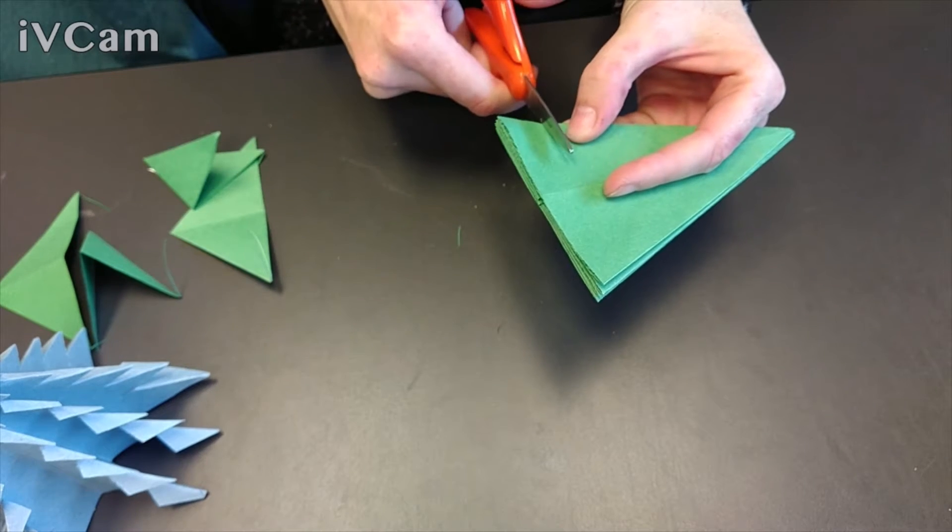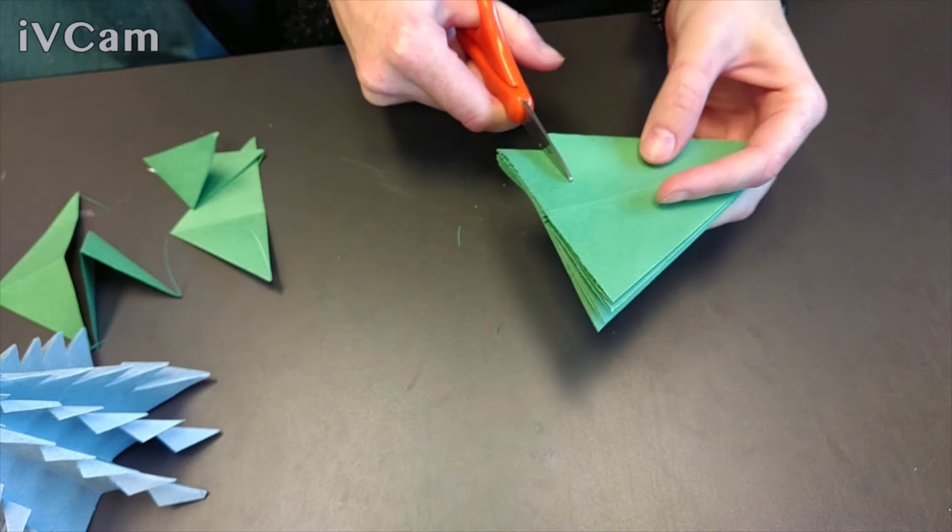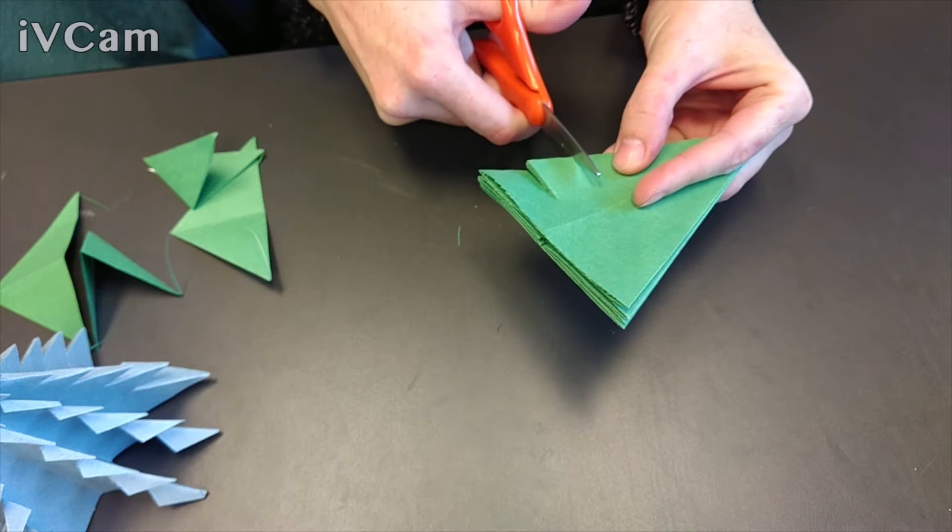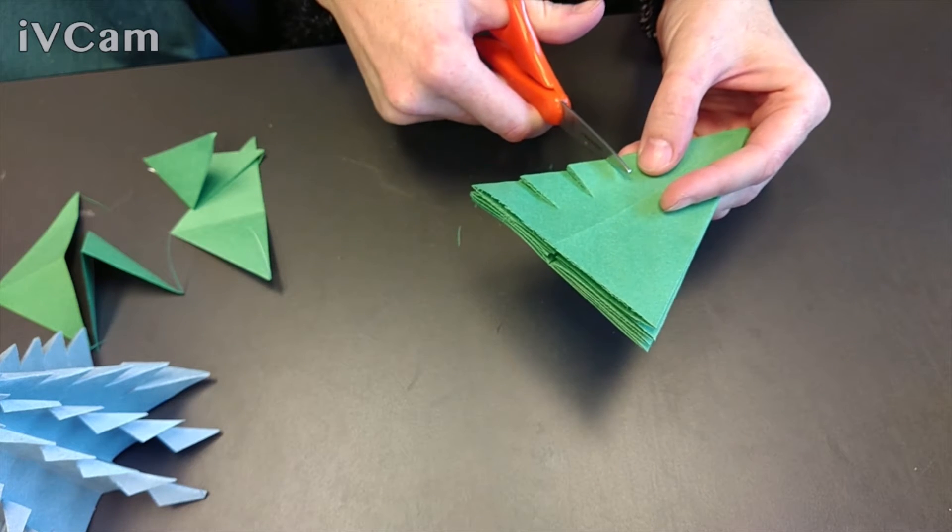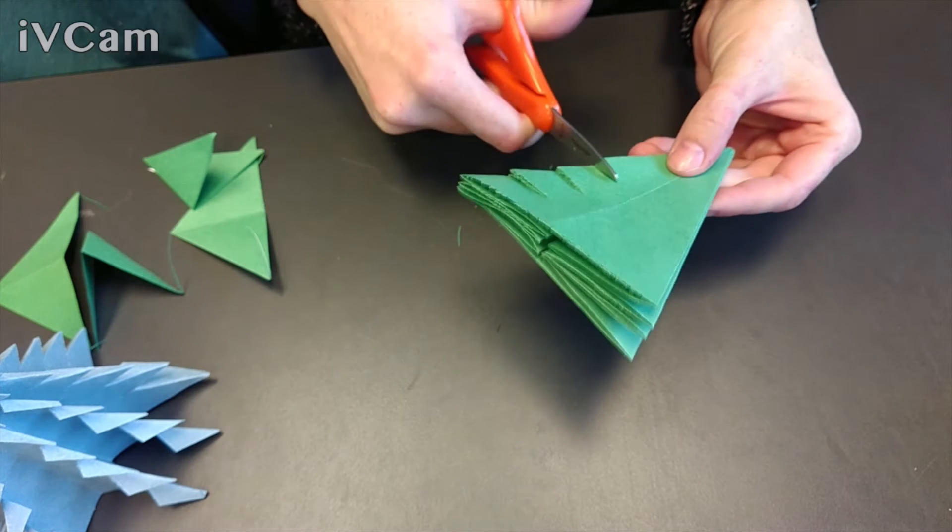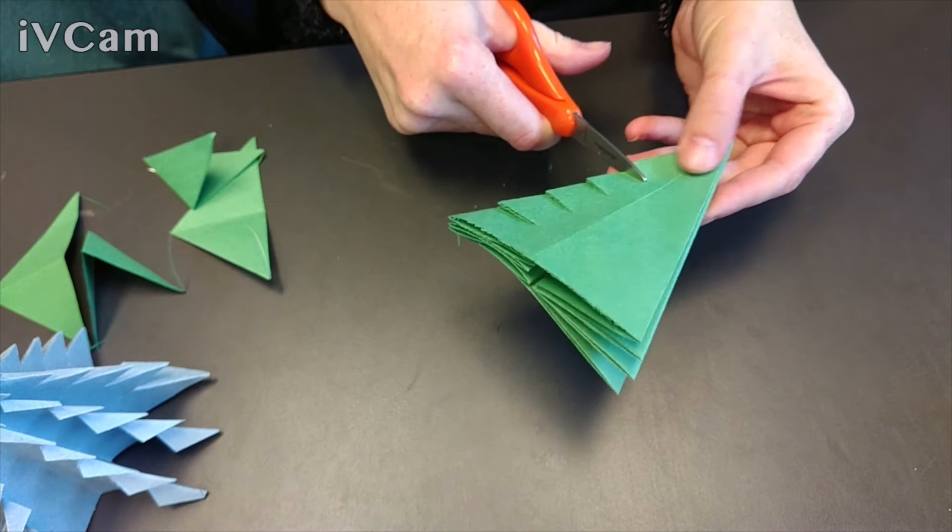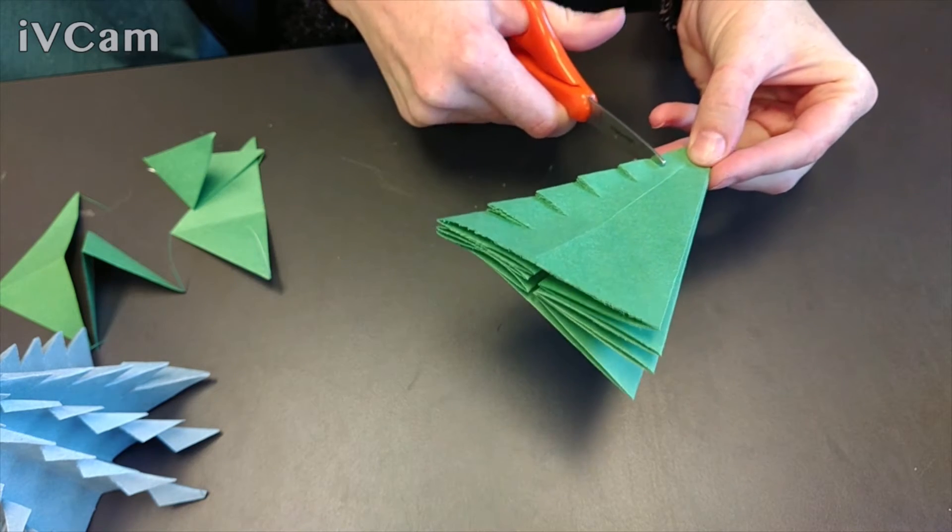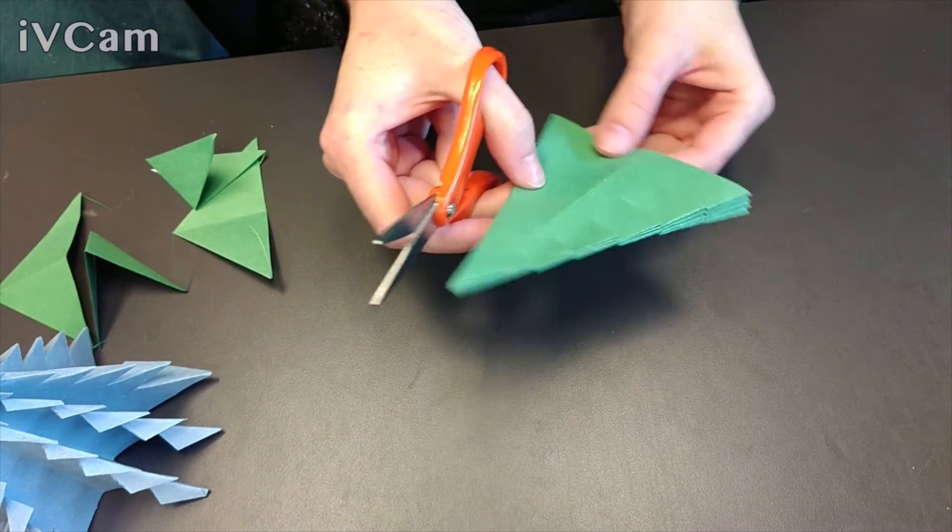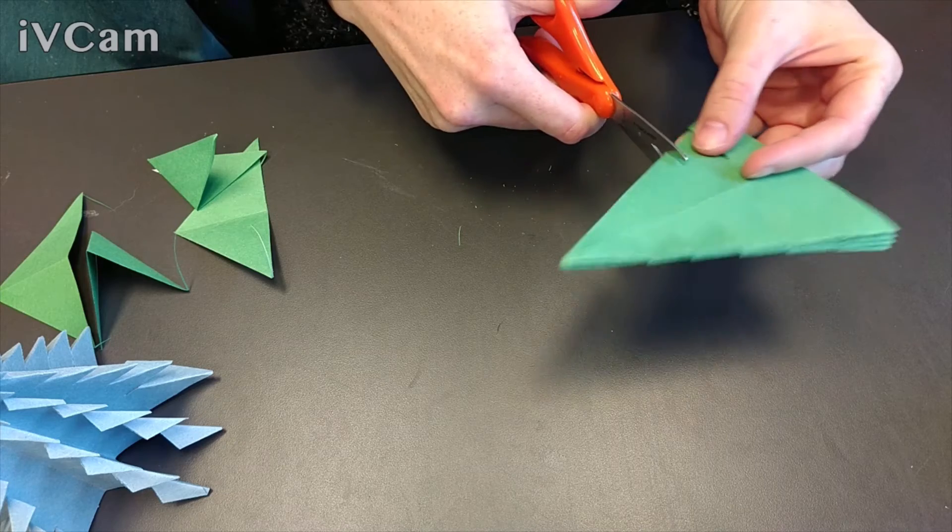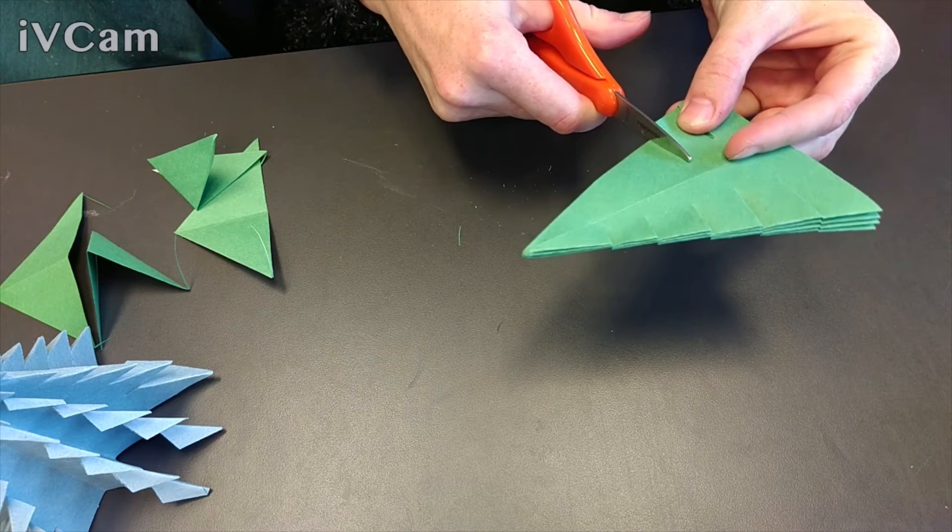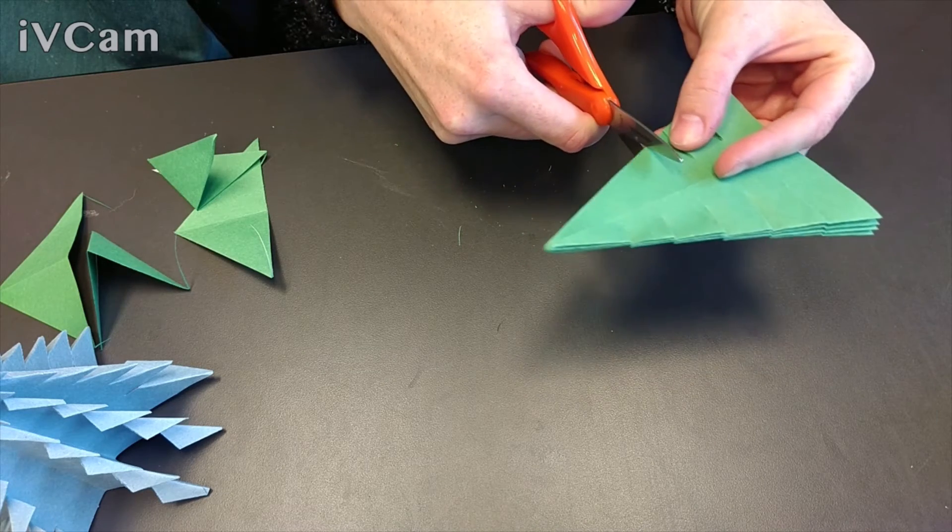Now we're going to cut strips. You do not want to cut to the middle of your tree. Don't go all the way to that line in the middle. You don't need to cut in very far. And you can cut as many strips or as few as you want. It just depends on what you want your tree to look like. It is completely up to you.